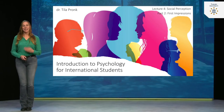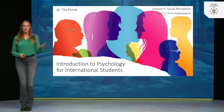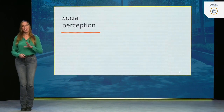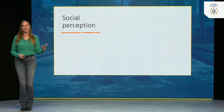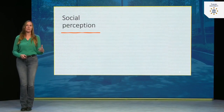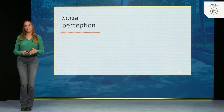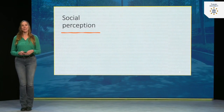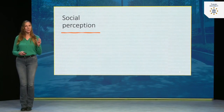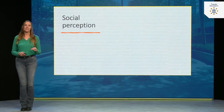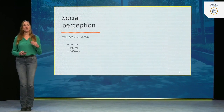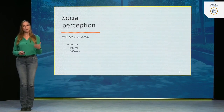This is part two of lecture four, and here we'll be talking about first impressions — how do we make a judgment about a person when we first meet them. This has everything to do with the general theme of social perception: how we form impressions and make inferences about people. Researchers, especially social psychologists, are very interested in this topic, and there has been quite some research on it. I will now tell you about one of my favorite studies on social perception.